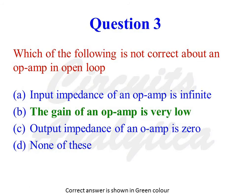Which of the following is not correct about an op-amp in open loop? The options are: input impedance of an op-amp is infinite; the gain of an op-amp is very low; input impedance of an op-amp is zero; none of these. The correct answer is: the gain of an op-amp is very low — because ideally, for an op-amp in open loop, the gain is infinite.